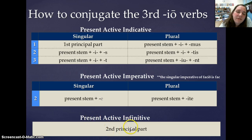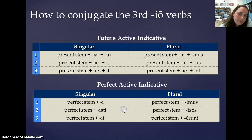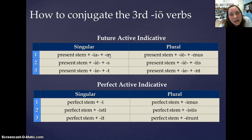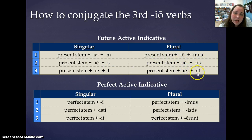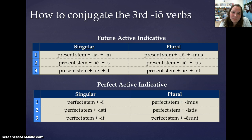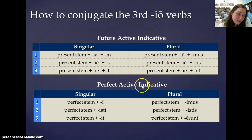The Present Active Infinitive is always the second principal part. The Future Active Indicative is going to look very similar to the Third Conjugation: -am, -es, -et, -emus, -etis, -ent — except it's going to be -iam, -ies, -iet, -iemus, -ietis, -ient. The Perfect Active Indicative — remember that the perfect system is completely regular for all verbs, which is why we love the perfect system. It's the perfect stem plus the perfect endings: -i, -isti, -it, -imus, -istis, -erunt.